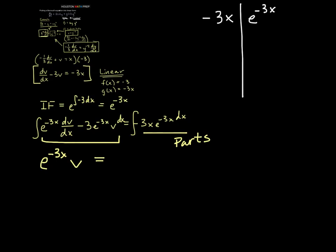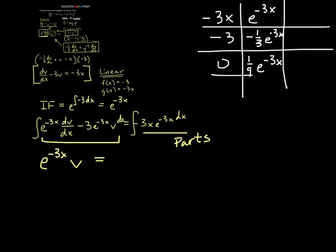And we'll continually differentiate u, so that will give us negative 3. And then when we differentiate again, it'll give us 0. If we integrate e to the minus 3x, that'll give us negative 1/3 e to the minus 3x. And if we integrate again, that will give us 1/9 e to the minus 3x. And our signs will change according to the by-parts rule.